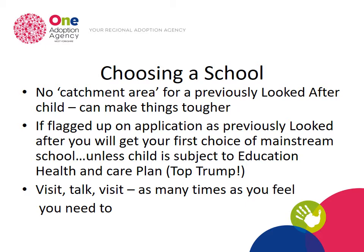When thinking about choosing a school, there isn't really a catchment area for a previously looked-after child — you can pick any mainstream school you think can best meet your child's needs. It's really important that you tick the box on the application form stating that your child is previously looked-after; in some cases you may be asked to prove this, such as showing the adoption certificate. If you flag that up on the application form, you will get your first choice of mainstream school.